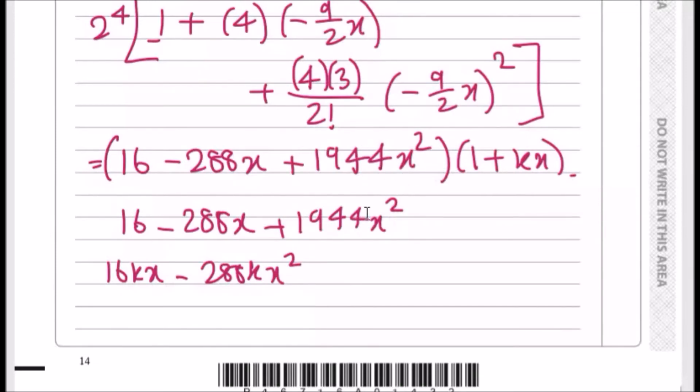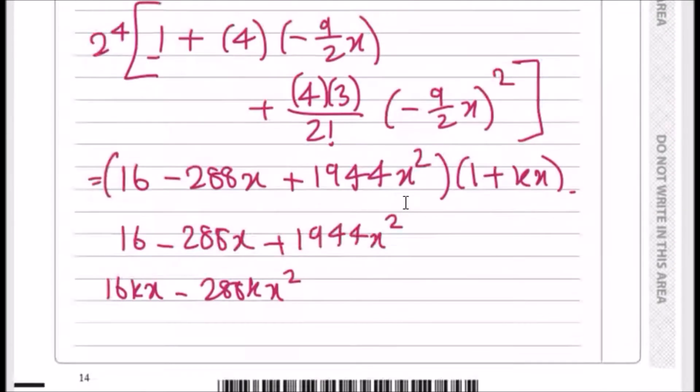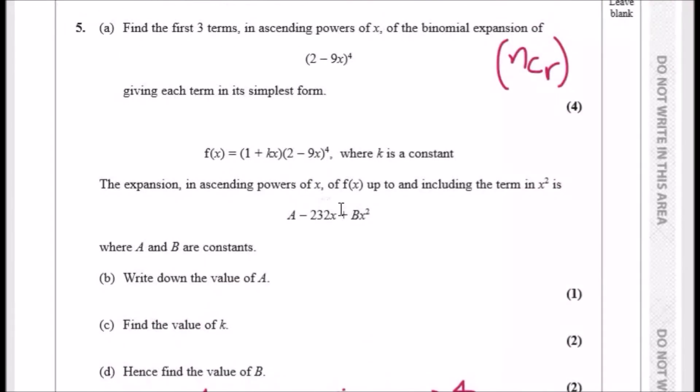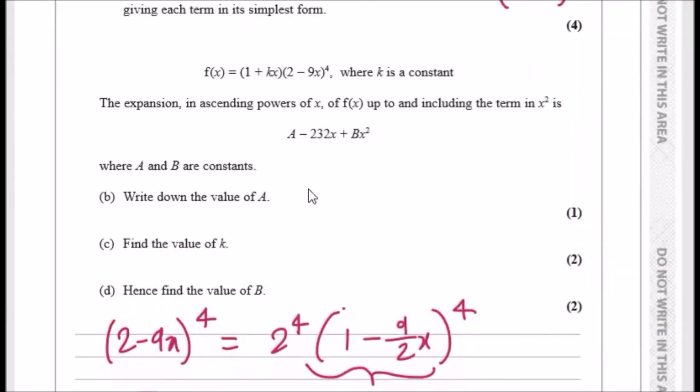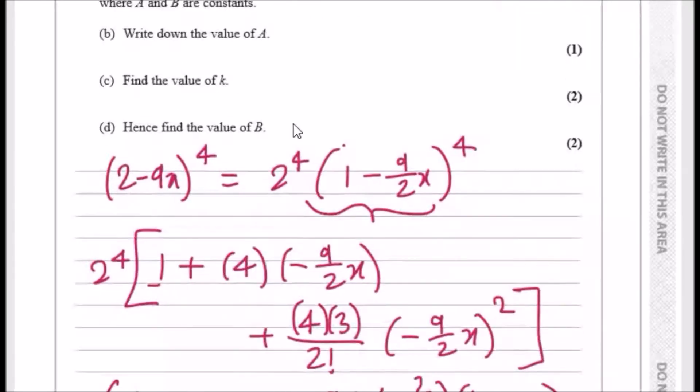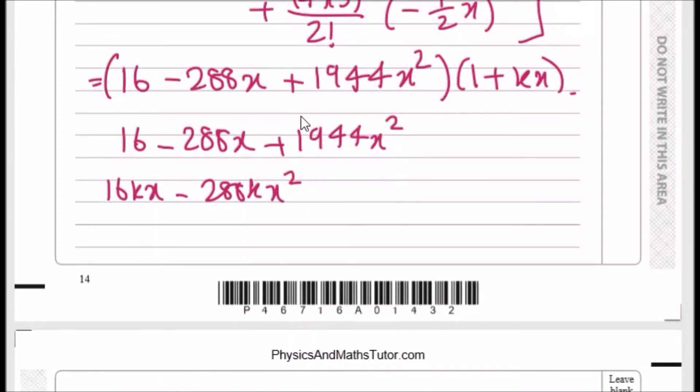Now what do we do here? Well, now we just match coefficients to each term. For example, we can say firstly that for the constant term, A must be equivalent to 16 because they're the only constants here. So we can say A is 16.